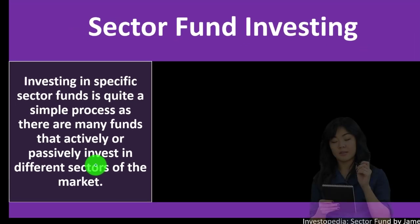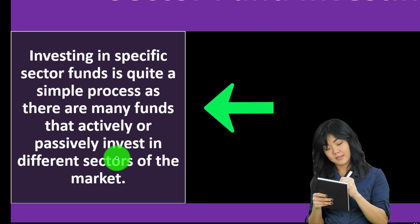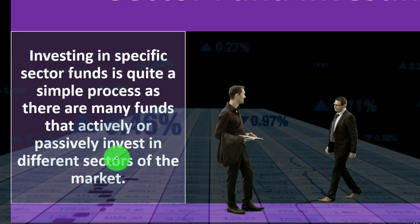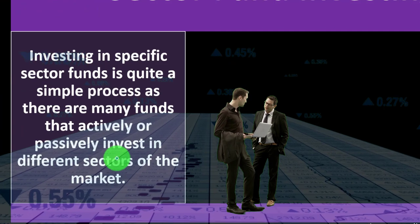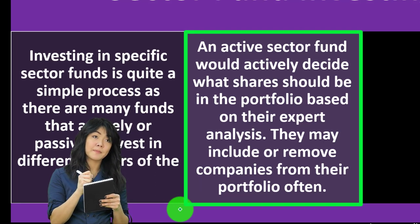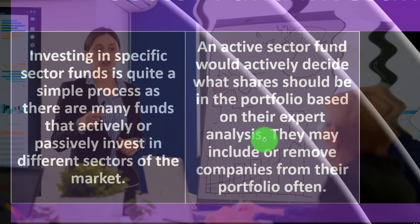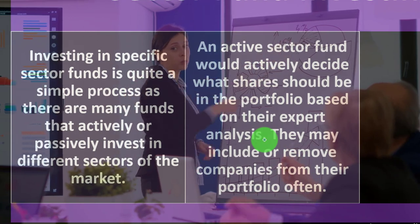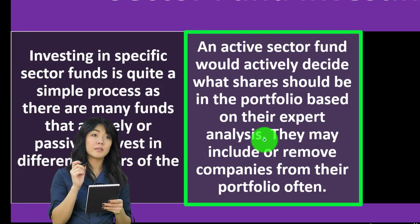Investing in specific sector funds is quite simple, as many funds actively or passively invest in different sectors. On investment platforms like Vanguard, you can typically find a wide variety of funds. An active sector fund actively decides what shares should be in the portfolio based on expert analysis — this costs more due to higher fund expenses. The active manager chooses holdings within the sector's restrictions, with the expectation of beating the relevant market index.